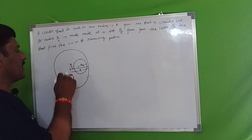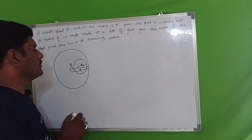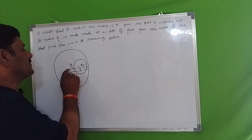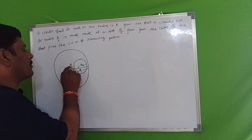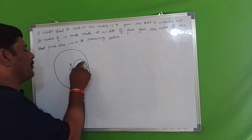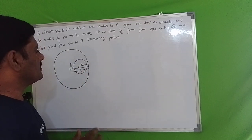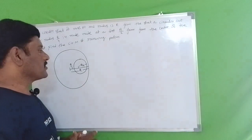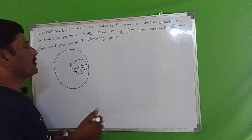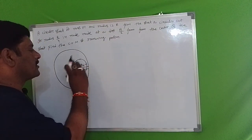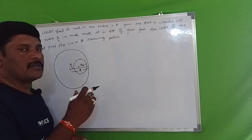We look at a circular disc of original radius R. If we cut a portion of radius R/4 from a distance R/2 from the center, we need to find the center of mass of the remaining part.